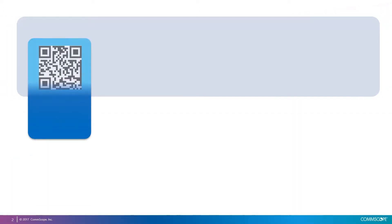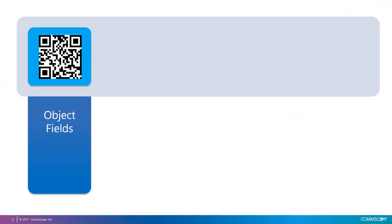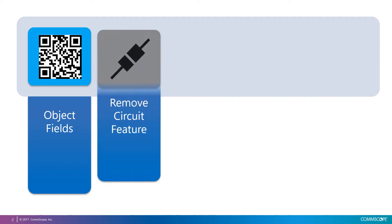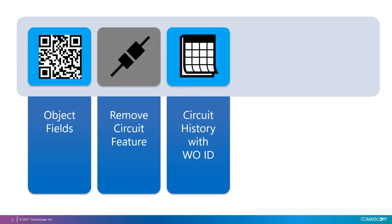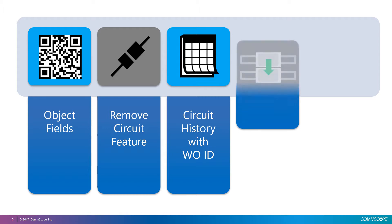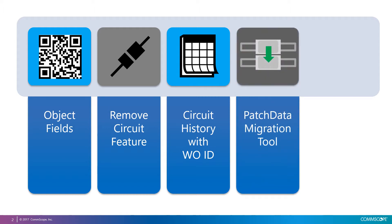First, we're going to see enhancements on asset related fields that allow System Manager to become a better and more flexible asset tracking tool. Then, we will see the new Remove Circuit feature. Next, a quick look at the Circuit History feature that now includes Work Order ID information. Last, we will introduce the new Patch Data tool that helps in the migration of patching data from one controller to another.